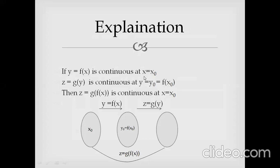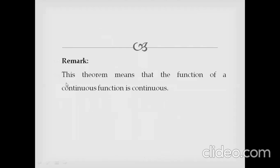At the point x = x₀, y is a continuous function of x, and z = g(y) is continuous at y = y₀. Then the composite function z = g(f(x)) is continuous at x₀. This theorem means that a function of a continuous function is continuous.